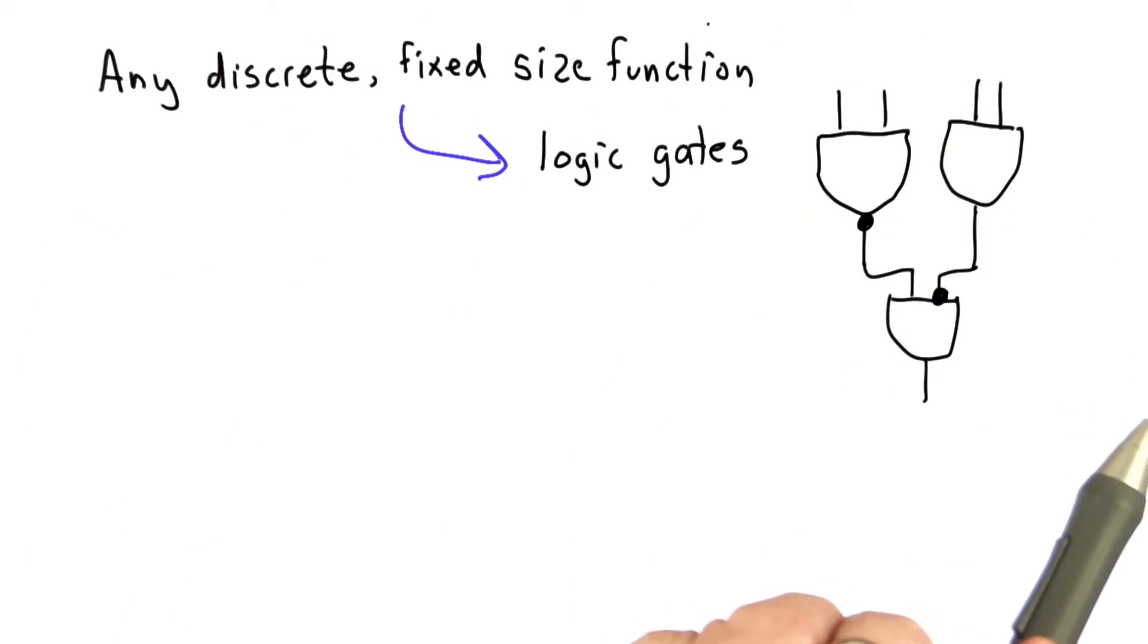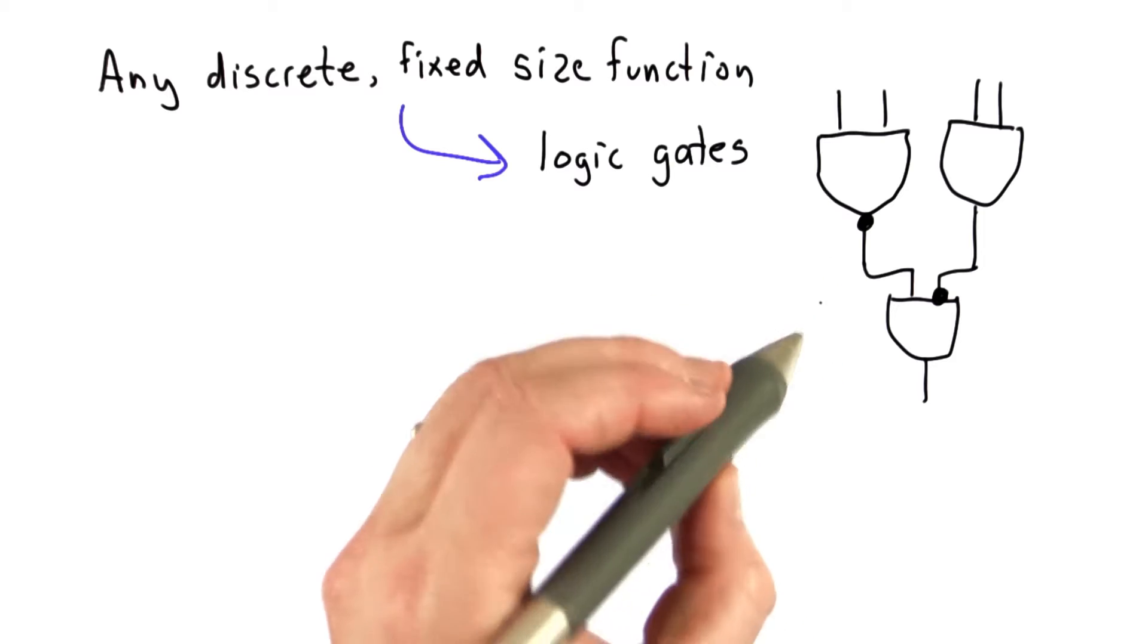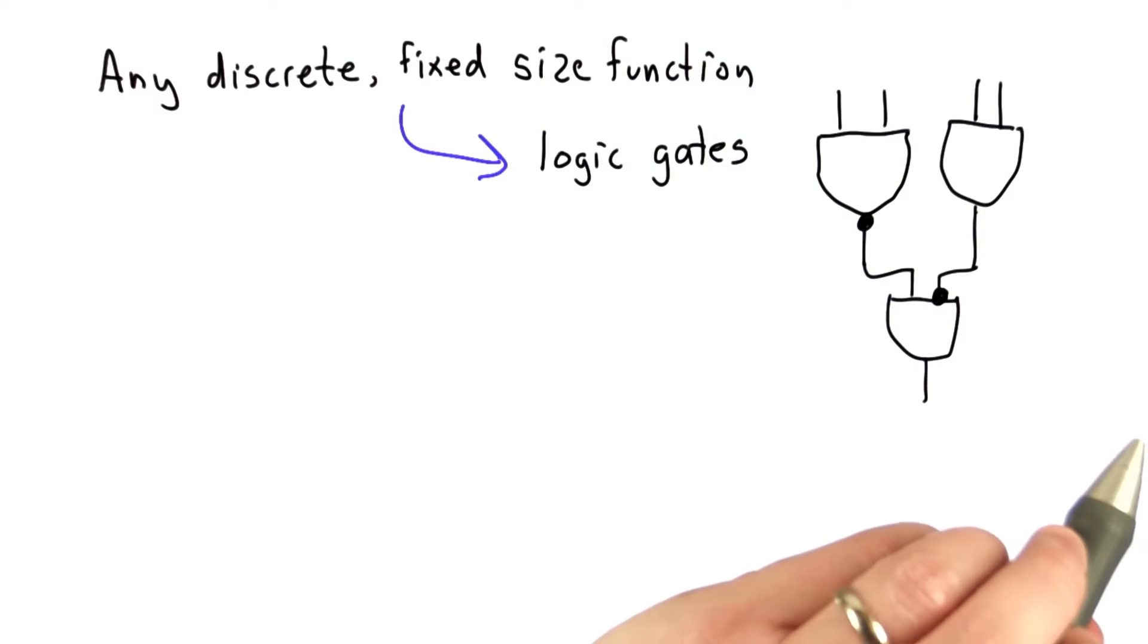The idea is that any discrete fixed-size function can be turned into logic gates. If we can find a way to implement logic gates securely, we can implement a whole function this way.